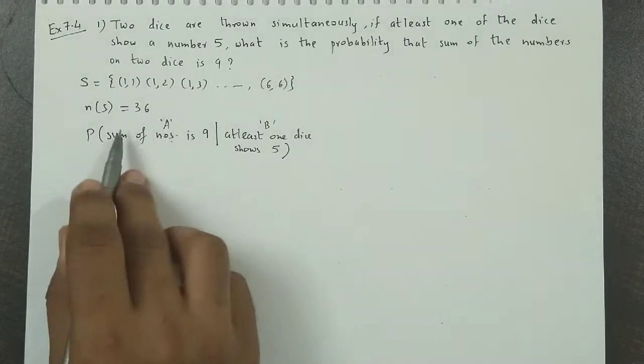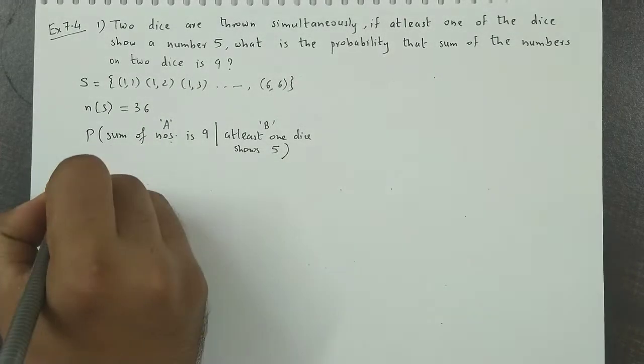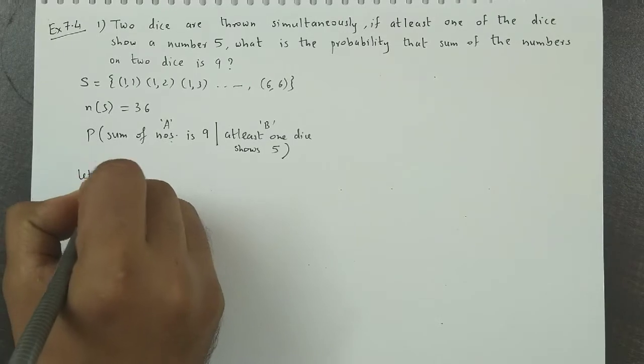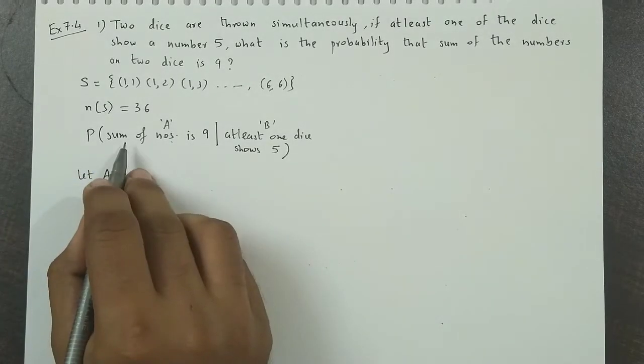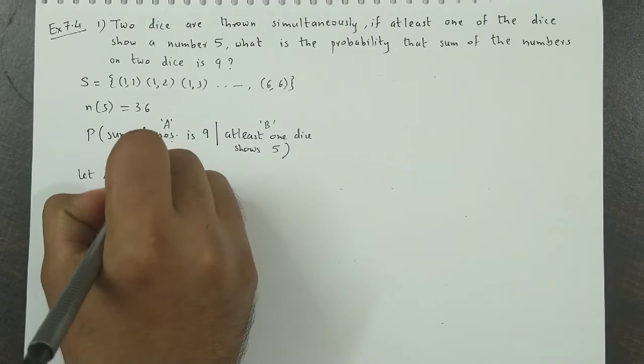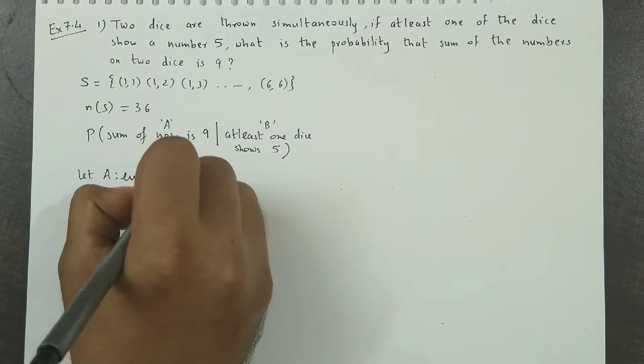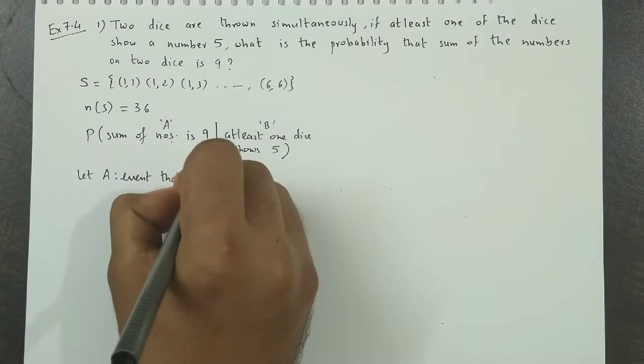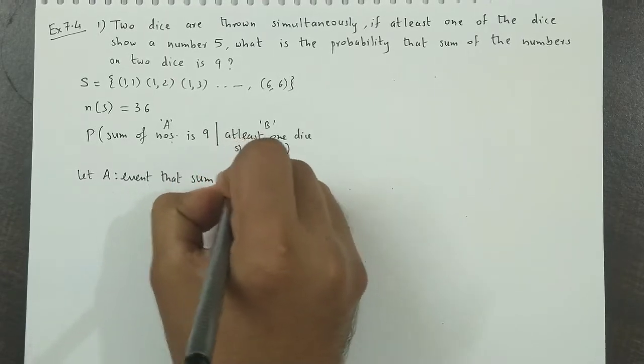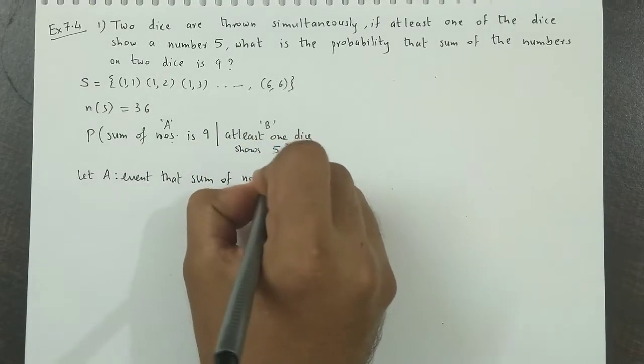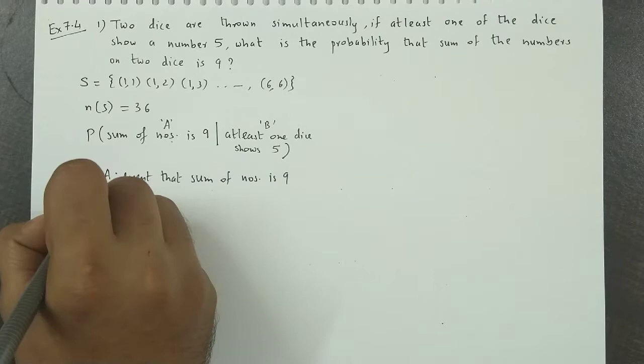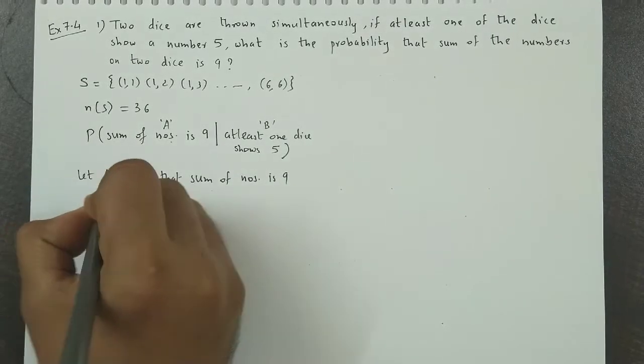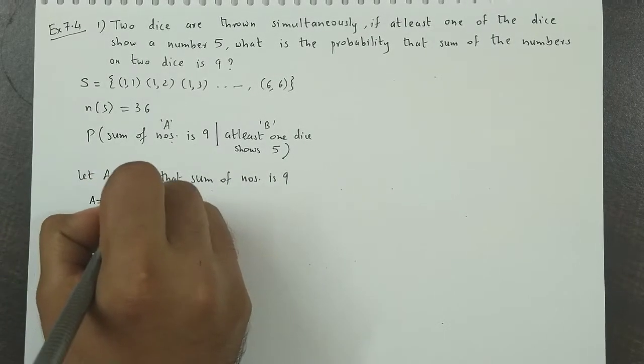So first we find the probability of event A. Suppose A is the event that the sum of numbers is 9. So event that the sum of numbers is 9, the favoring outcomes will be: that would be (3,6), (4,5),